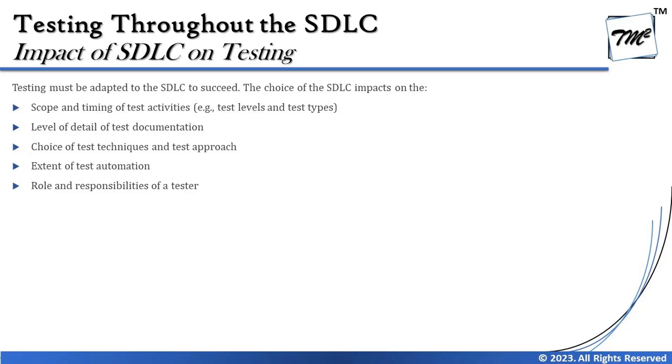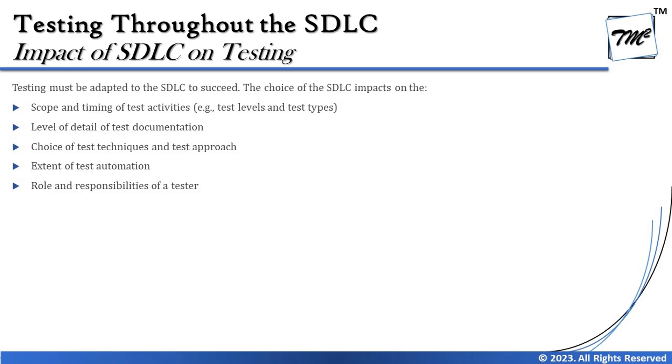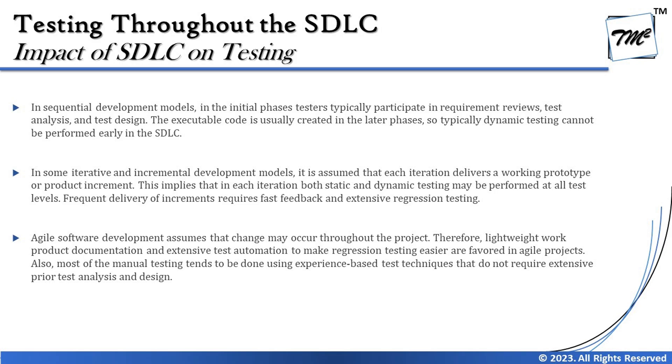Fourth is the extent of test automation. In traditional models automation may be limited, but in agile, maximum automation is sought because of tight timelines. Finally, the role and responsibility of the tester differs: in traditional models testers are limited to testing only, while in agile they may have cross-functional abilities and responsibilities — participating in release planning and iteration planning meetings, whereas in traditional models this may be limited to a test lead or test manager.